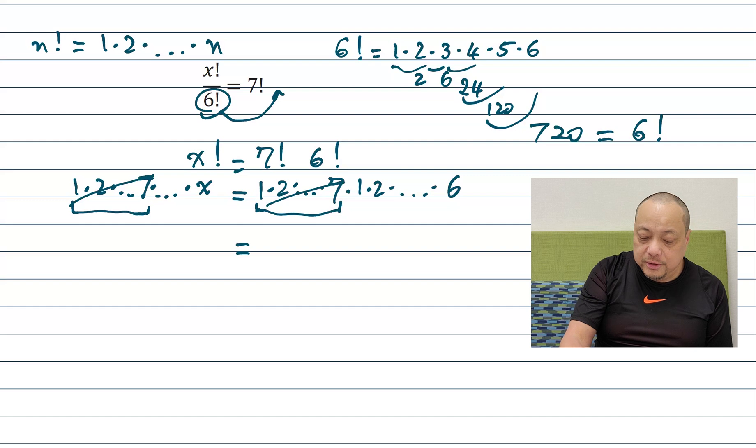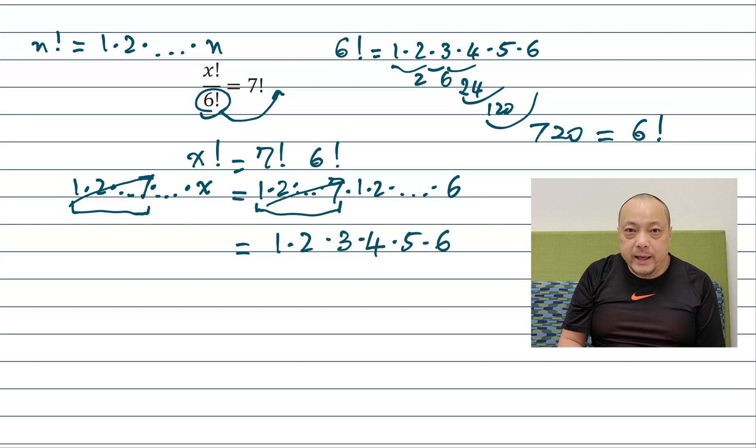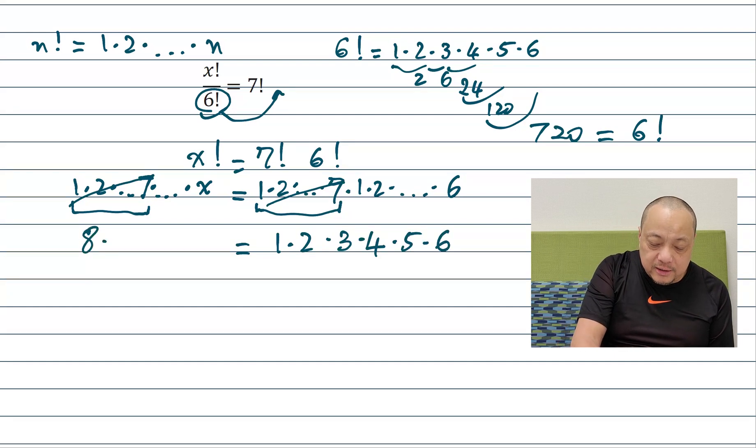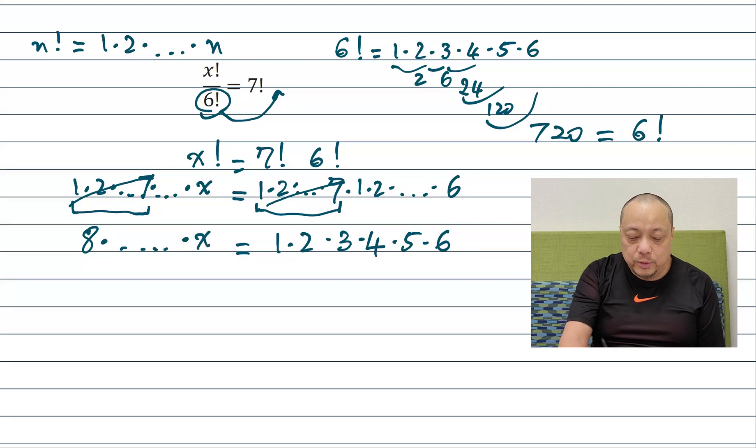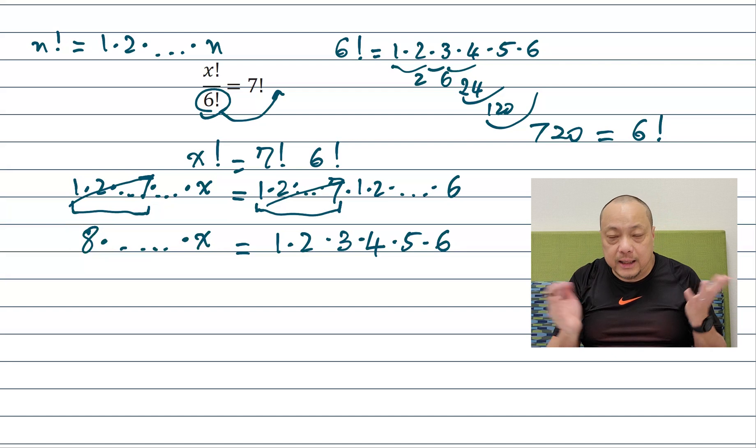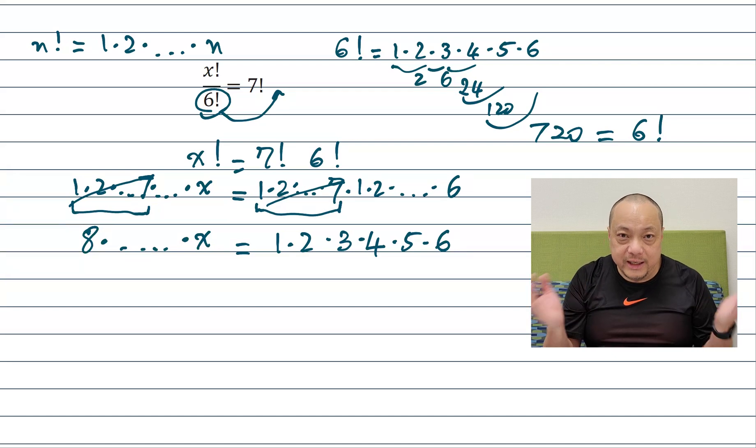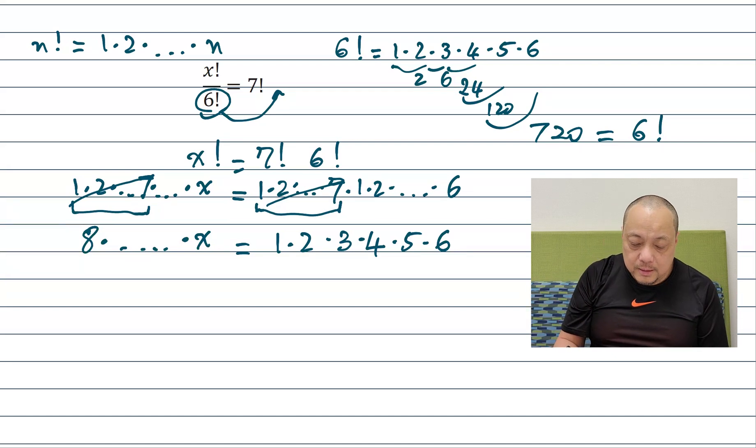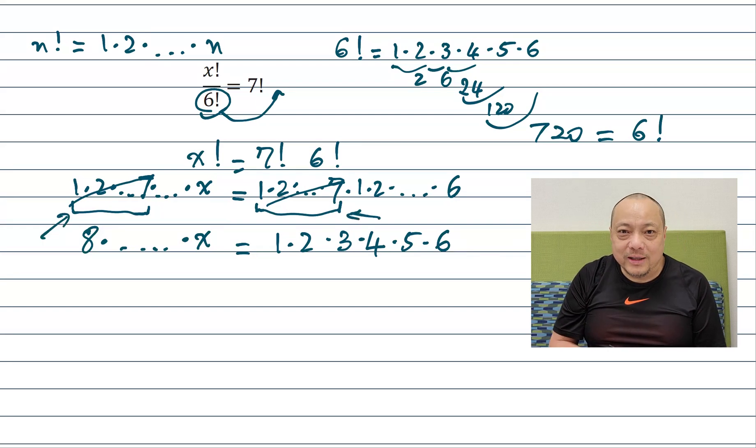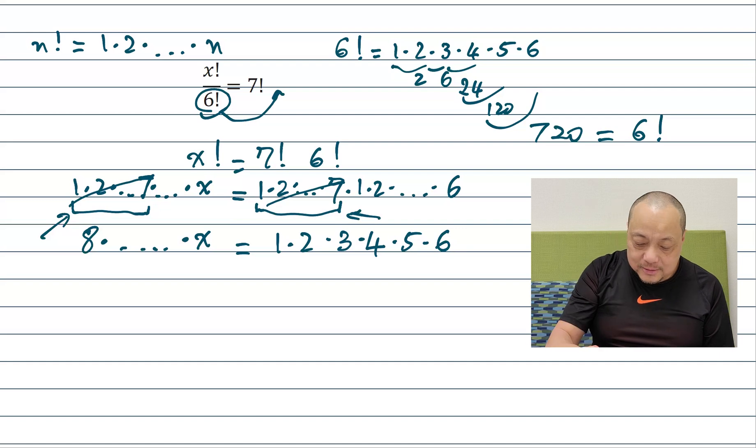1 through 7 is cancelled out with 1 through 7. So now on the right hand side I have 1, 2, 3, 4, 5, 6 whereas on the left hand side I have 8 times something times x where x is the end of that multiplication whatever the end of it is. Well I did such a good job canceling both sides with these factors. I'm looking to do it again.